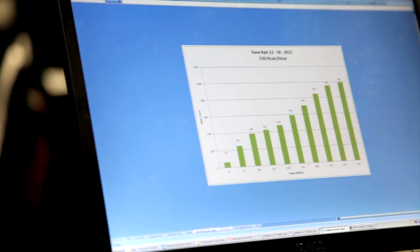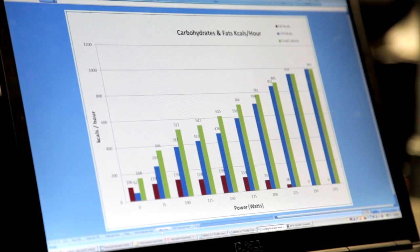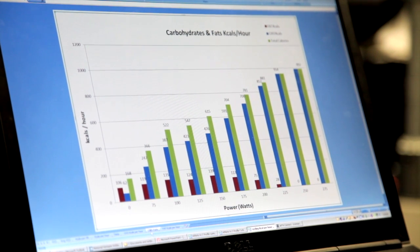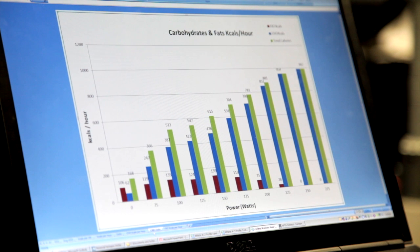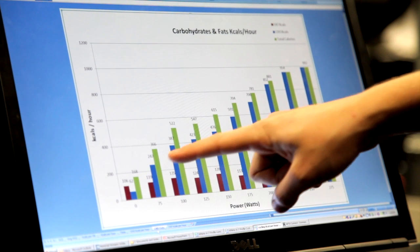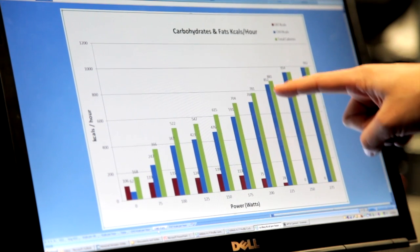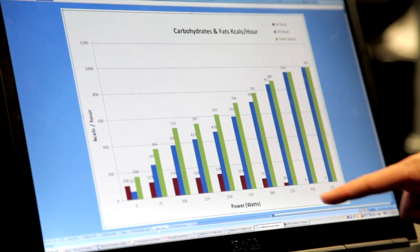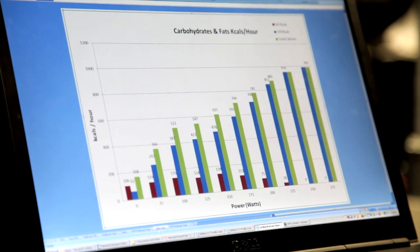This one right here is showing all that same data only broken into total calories, fat calories, and carbohydrate calories. So you can see here that athlete is burning primarily carbohydrates as a percentage of their total calories. And at the higher intensities, they actually burn no fat.